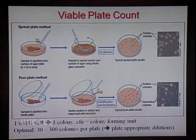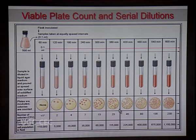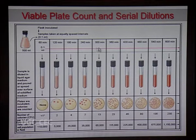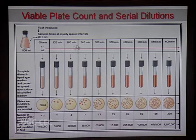The viable plate count method uses two techniques: spread plate method and pour plate method. A viable cell is one capable of reproducing and hence forms colonies when plated on a solid medium. The viable plate count method is performed to find the number of colony forming units (CFU) per ml of culture medium. One colony seen on the agar plate equals one CFU. Cultures taken at equal time intervals are plated on nutrient agar medium; the number of colonies are counted and CFU per ml is calculated at each time point.